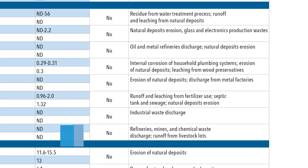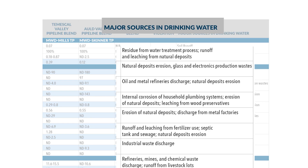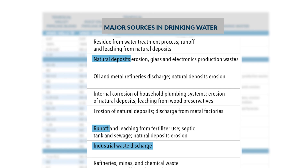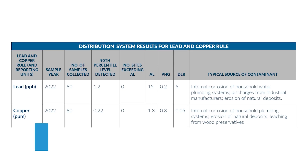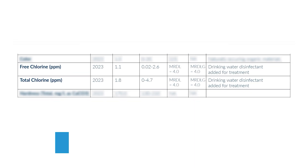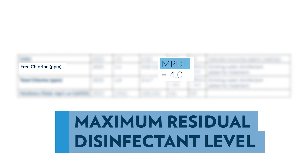You'll also see the term ND, which means not detected. Major Sources explains where the contaminant usually comes from, like natural deposits, runoff, or industrial processes. Action Level is the concentration of a contaminant that, if exceeded, triggers treatment or other requirements a water system must follow. Maximum Residual Disinfectant Level, or MRDL, is the highest level of a disinfectant allowed in drinking water. Disinfectants like chlorine are used to control microbes.